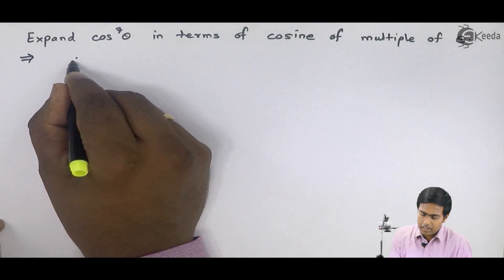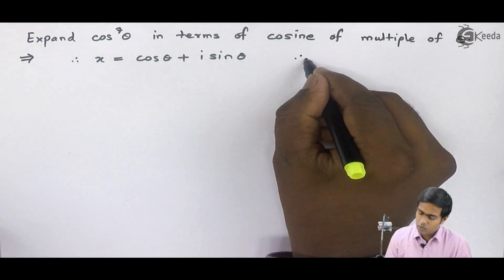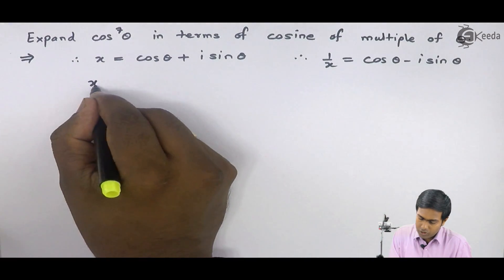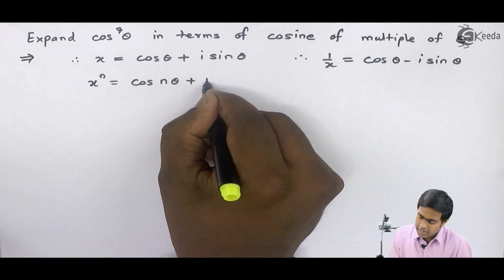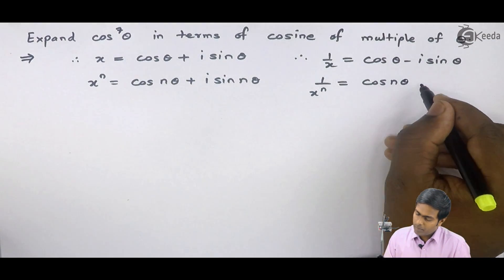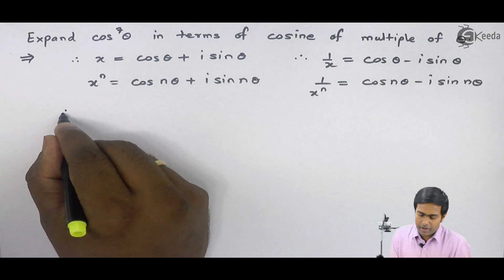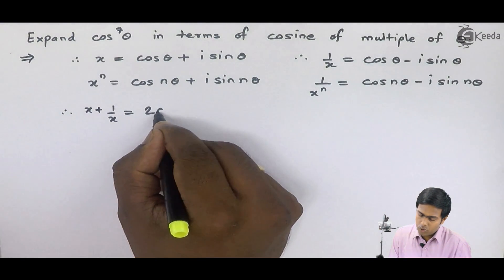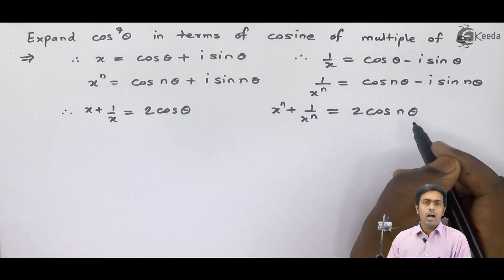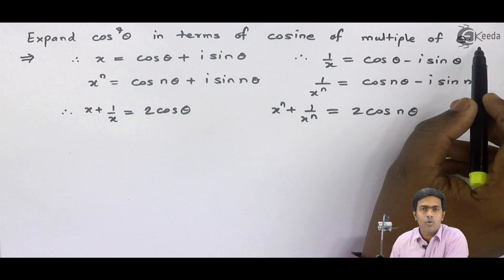For that, I will consider a complex number x which is cos theta plus i sine theta. Therefore I get 1 upon x as cos theta minus i sine theta. Similarly, we consider the power of this complex number: x raised to n gives cos(nθ) plus i sin(nθ) by De Moivre's theorem, and 1 upon x raised to n gives cos(nθ) minus i sin(nθ). So x plus 1 upon x equals 2 cos theta, and x raised to n plus 1 upon x raised to n equals 2 cos(nθ). I am only considering the cosine terms because I want the answer as multiples of cosines of theta.